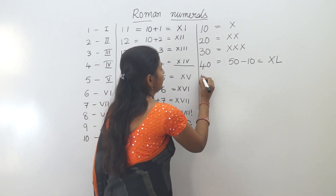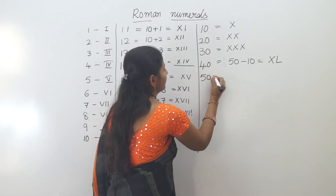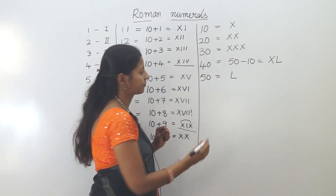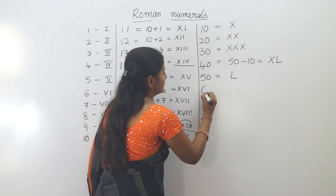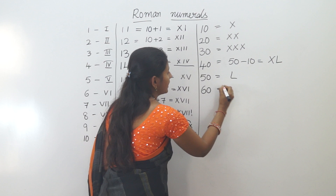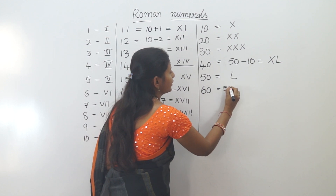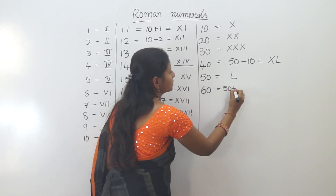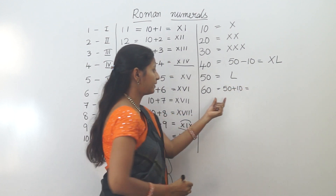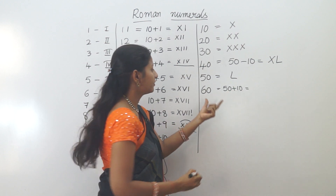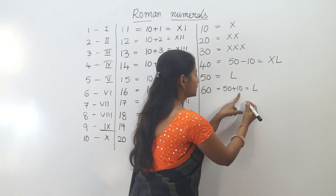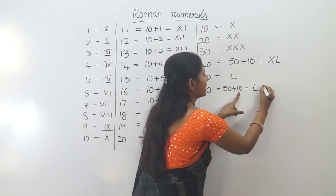Next is 50, which is written as L. For 60: 50 plus 10. L is 50, and we add X (10) to the right side, so 60 is LX.